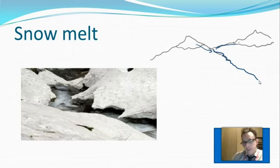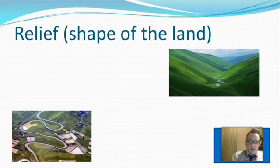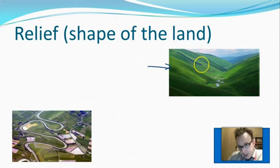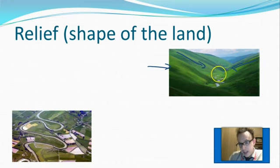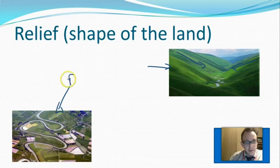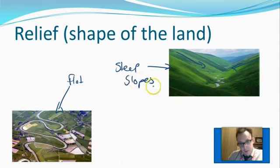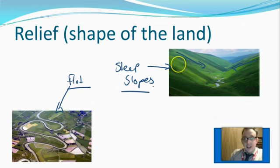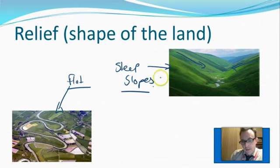When snow melts it turns into water, which flows down the hills and into the river. Snow melt, when it melts quickly, leads to a lot of water being rapidly added to the river, increasing discharge. If you increase the discharge, there's more water in the river, so there's a higher chance it's going to flood. Relief — the shape of the land — can also have an impact. Steep slopes flowing down towards the river mean that any water flows into the river much quicker than on flat land. Runoff will be quicker.